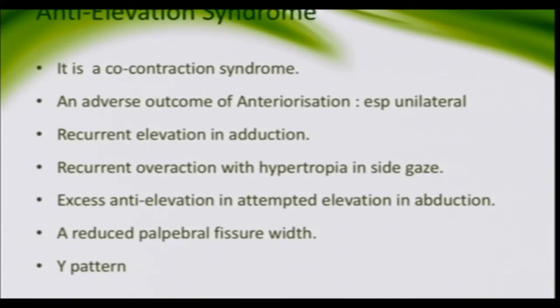What happens in anteriorization: when you place the muscle anterior to the equator, very close to the inferior rectus, it acts as a depressor in abduction — while the superior rectus is acting as an elevator — causing a co-contraction syndrome. This induces the apparent overaction of the other eye's elevation in adduction.